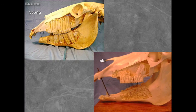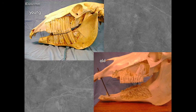The cheek teeth in horses are sometimes referred to as ever-erupting — they do have a limit but start out as very long teeth. In a young animal the maxillary sinus contains the roots of premolar 4 and the first three molars. As those teeth wear down over time, the maxillary sinus enlarges.